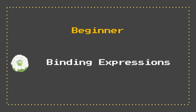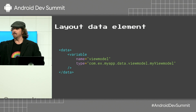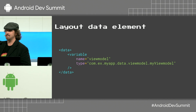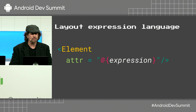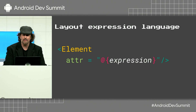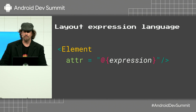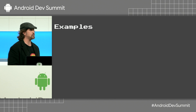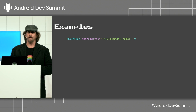So let's talk about binding expressions. In order to do this, we actually have to make data available to our layout by declaring variables in this data section of our layout. And then we can use expressions in layout XML attributes to actually tie that data to views. Expressions are actually wrapped in curly braces and prefixed by an at sign. Here are some examples: in this first one, we're assigning a text property to a view model property.